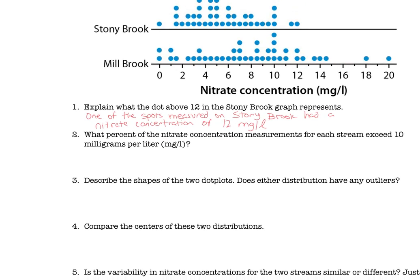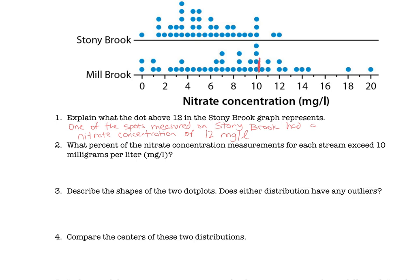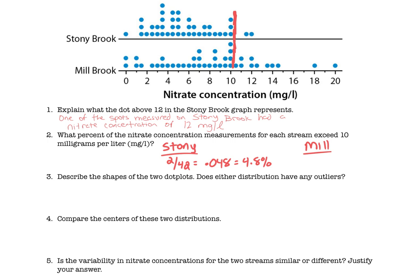What percent of the nitrate concentration measurements for each stream exceed 10 milligrams per liter? Exceeding 10 means what happened above 10. We're looking for above 10. If you look where I'm drawing, anything passed to the right of that red line. If we're doing Stony Brook first, remember there were 42 spots there, so that would be 2 divided by 42 to get the percentage. That comes out to be 0.048 or 4.8%. If we're doing the same thing for Mill Brook, how many dots are to the right of that red line for Mill Brook? I'm seeing 1, 2, 3, 4, 5, 6, 7, 8, 9, 10, 11. That's 11 out of 42, which gives you 0.262 or 26.2%.